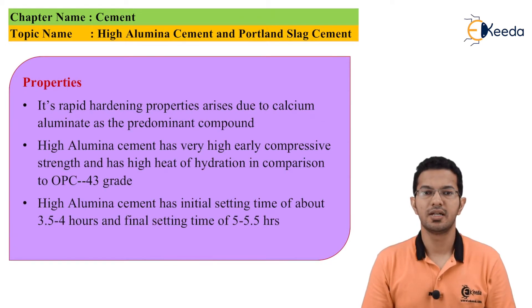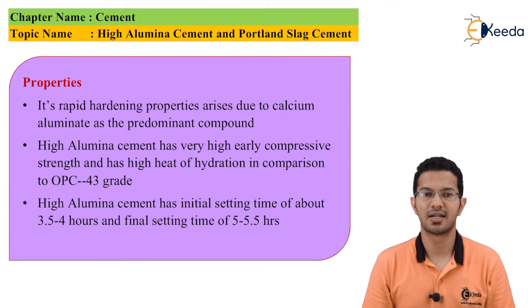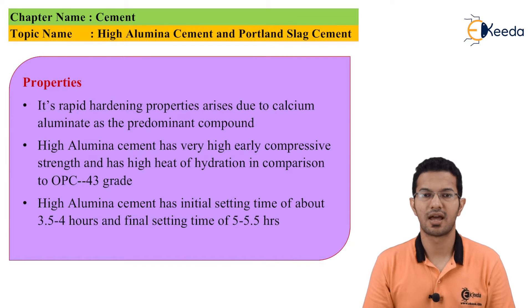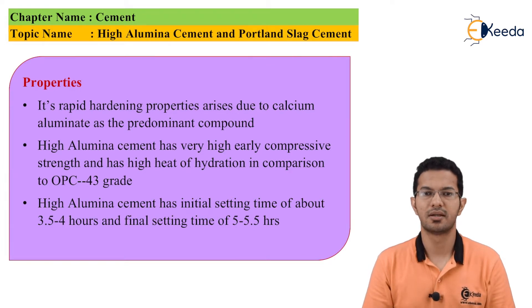The properties of high alumina cement are very important. One interesting point regarding the setting is that the initial setting time is more than OPC, so we have enough time to place this cement. This cement has a lesser final setting time. Its rapid hardening properties arise due to calcium aluminate as the predominant compound. High alumina cement has very high early compressive strength and high heat of hydration in comparison to OPC 43 grade.